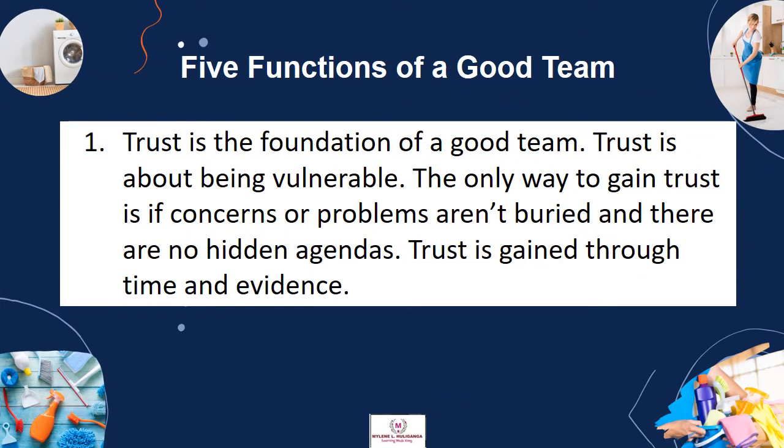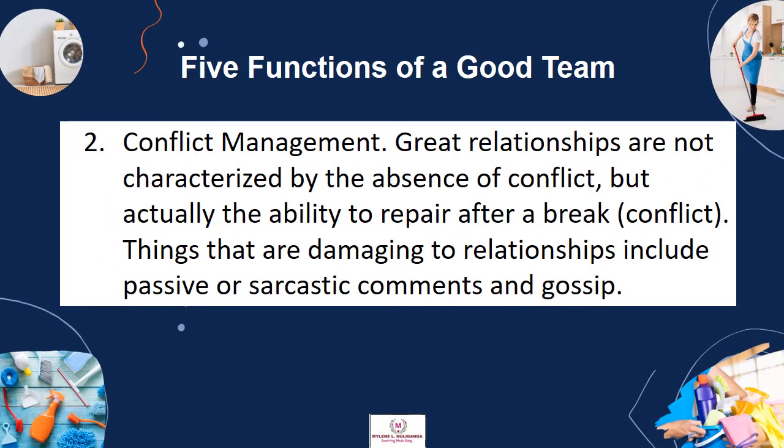The following are the five functions of a good team. Number one: trust is the foundation of a good team. Trust is about being vulnerable. The only way to gain trust is if concerns or problems are buried and there are no hidden agendas. Trust is gained through time and evidence. Number two: conflict management. Great relationships are not characterized by the absence of conflict, but actually the ability to repair after a break or conflict.